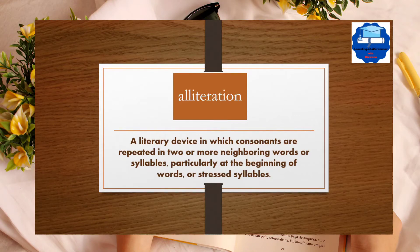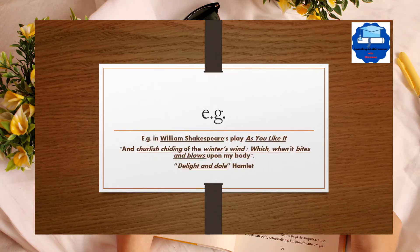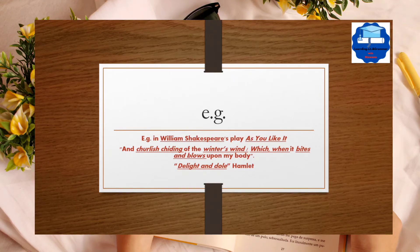For example, in William Shakespeare's play As You Like It, the repeating sounds of 'ch' is a beautiful use of alliteration. In Hamlet, there is an example: 'delight and dole.' Here the repetition of the bass consonant sound has created a special effect.